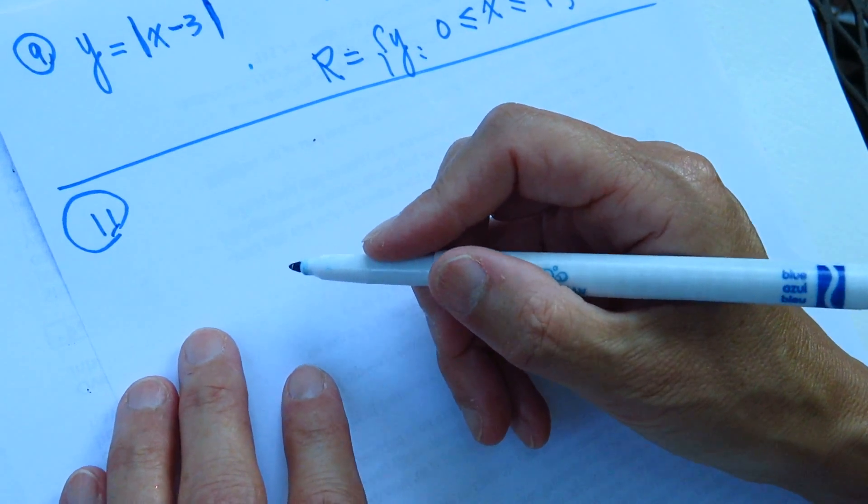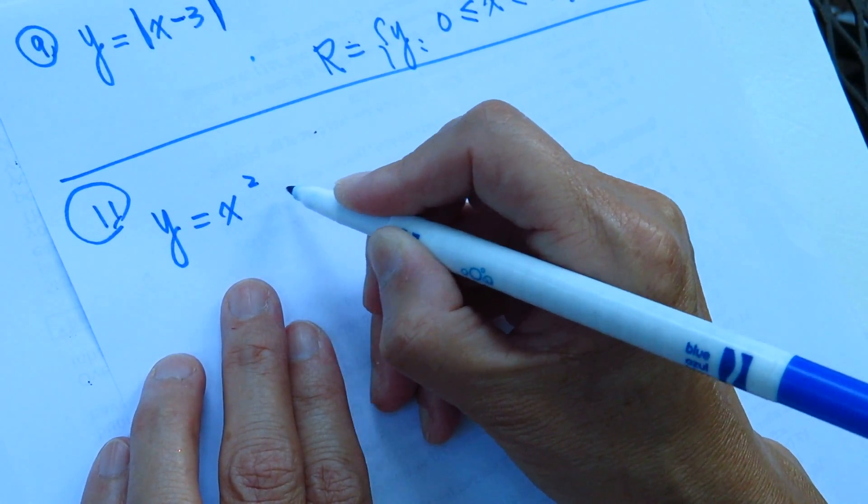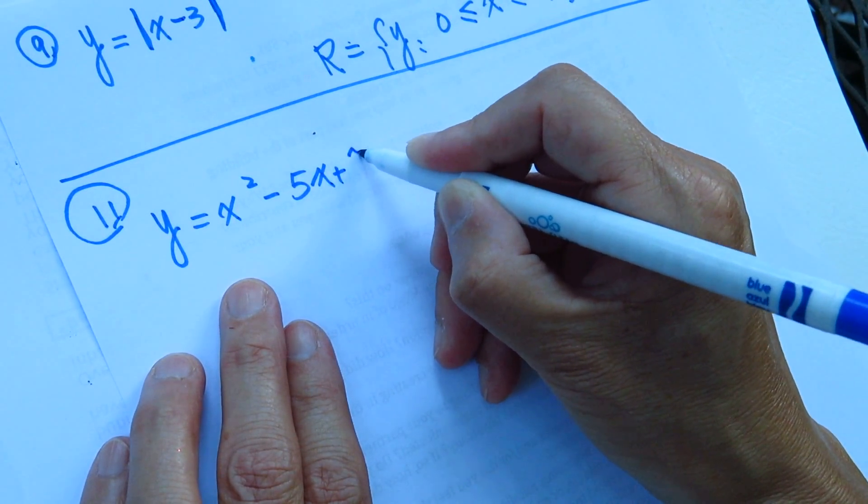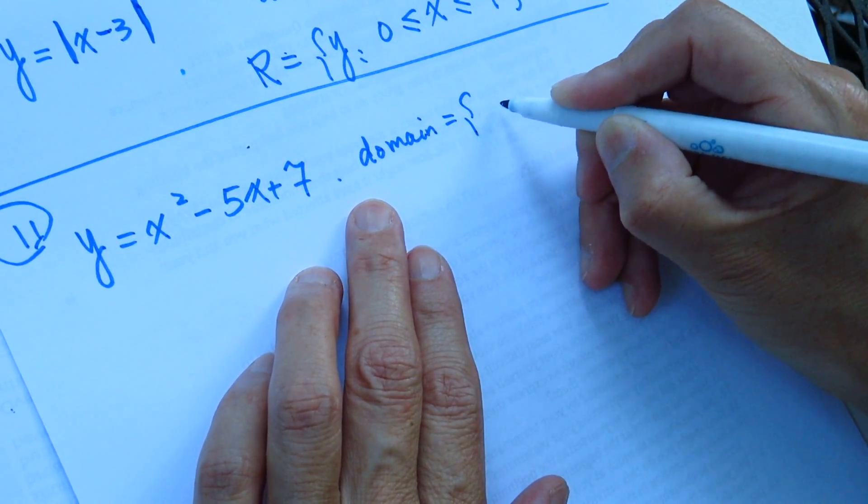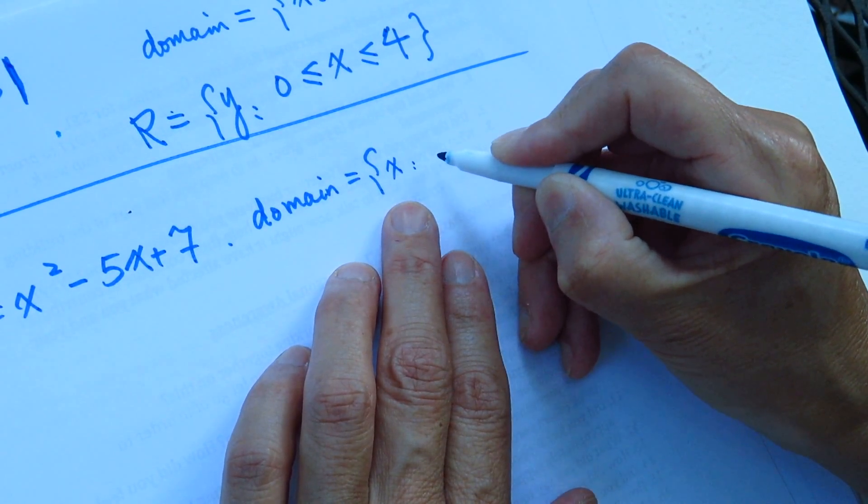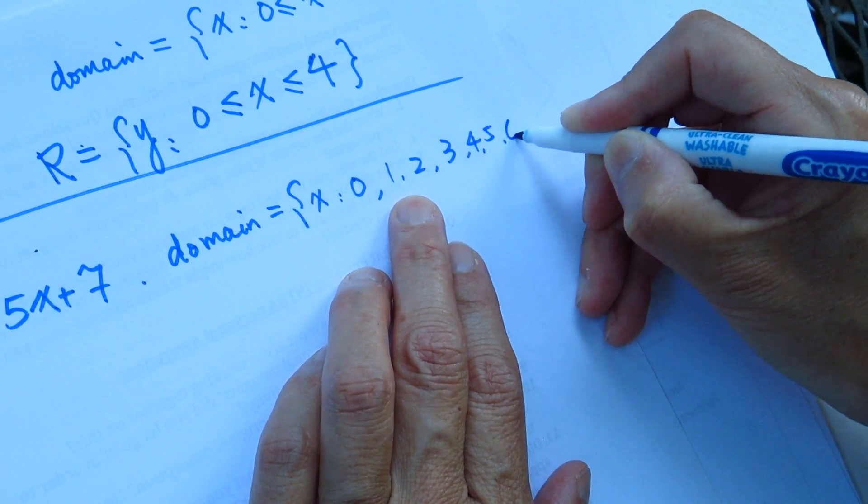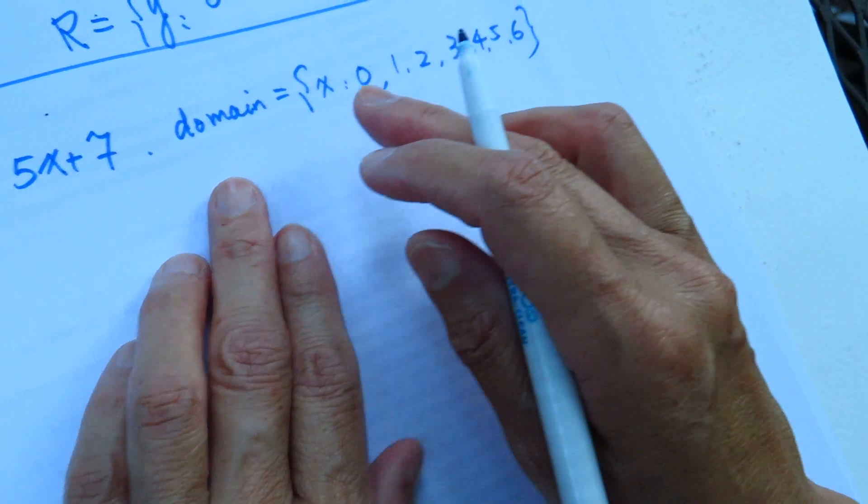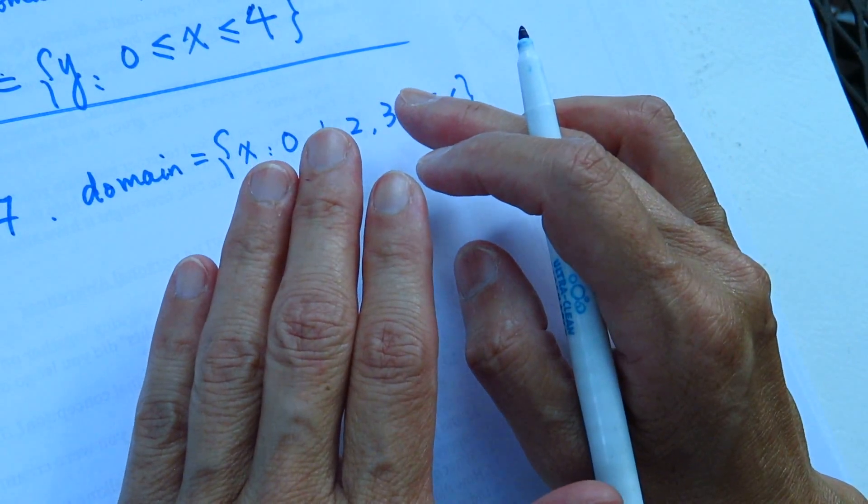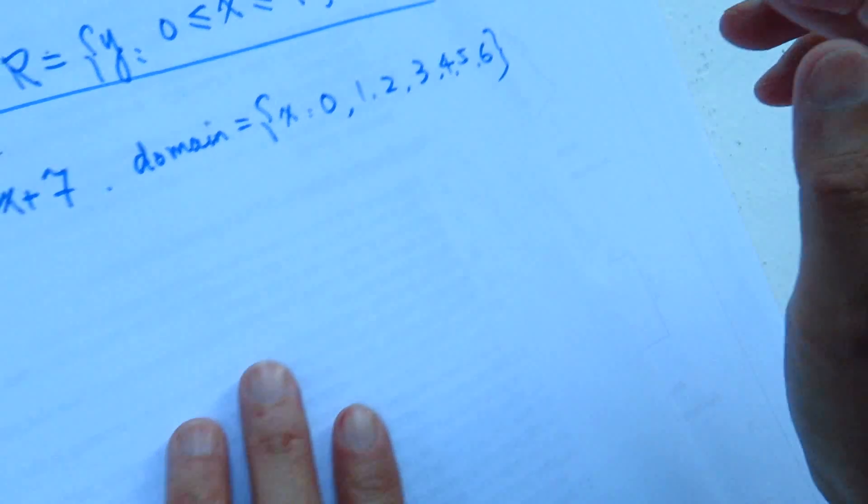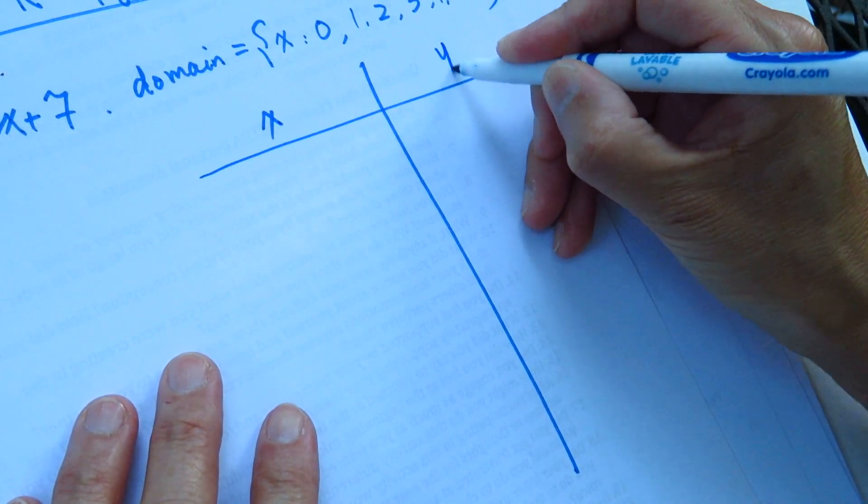Number 11. Y equal to 2x² minus 5x plus 7. The domain, the X, are these numbers precise: 0, 1, 2, 3, 4, 5, 6. So what do we do? Domain, the X are these numbers precise. So we will need to figure out the Y value precise. So we will do a chart. When X, then Y.